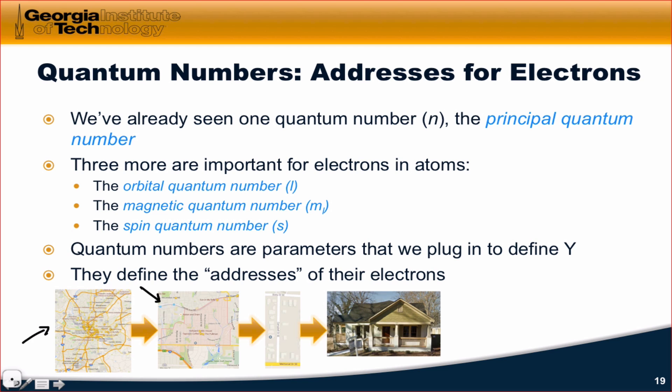The orbital quantum number is like the neighborhood, it's a little more specific. The magnetic quantum number is a street within the neighborhood. And the spin quantum number is, say, the particular house within that street, within that neighborhood,